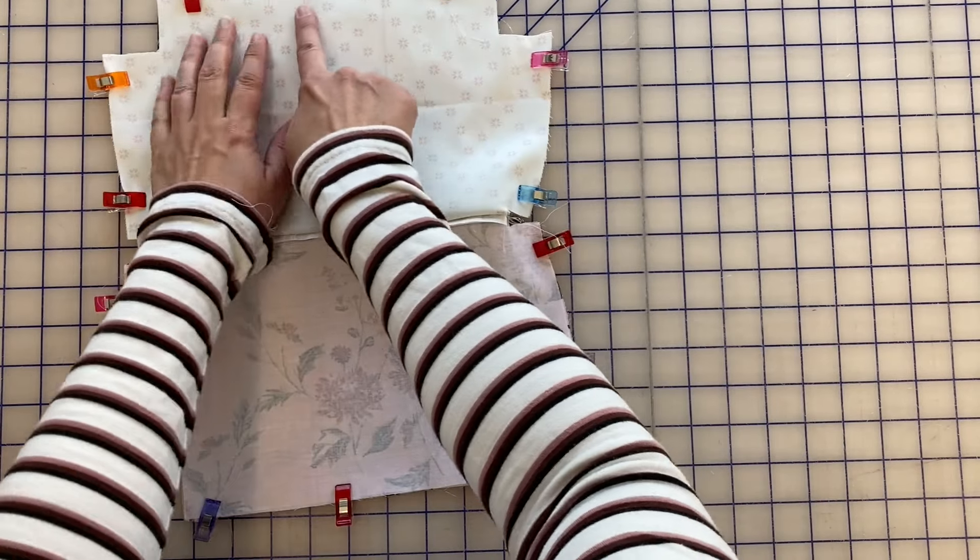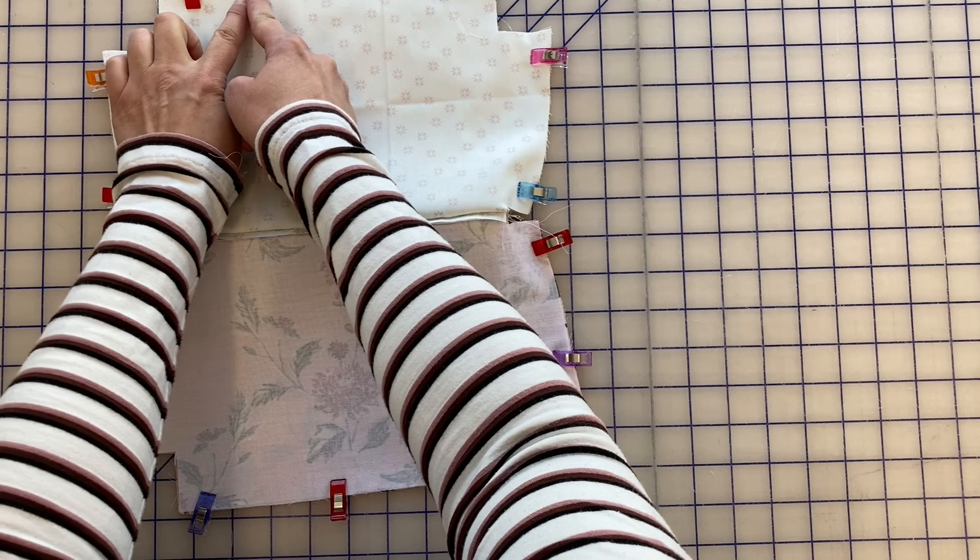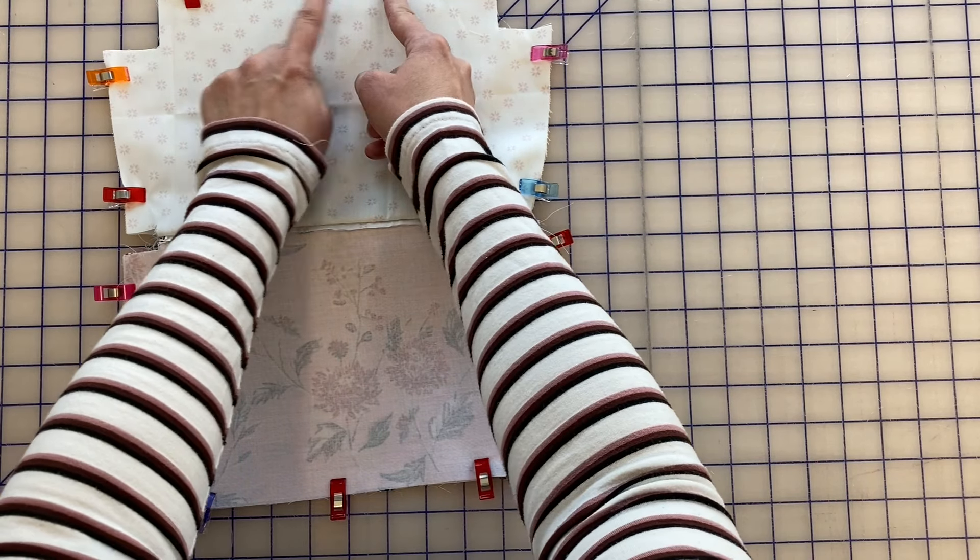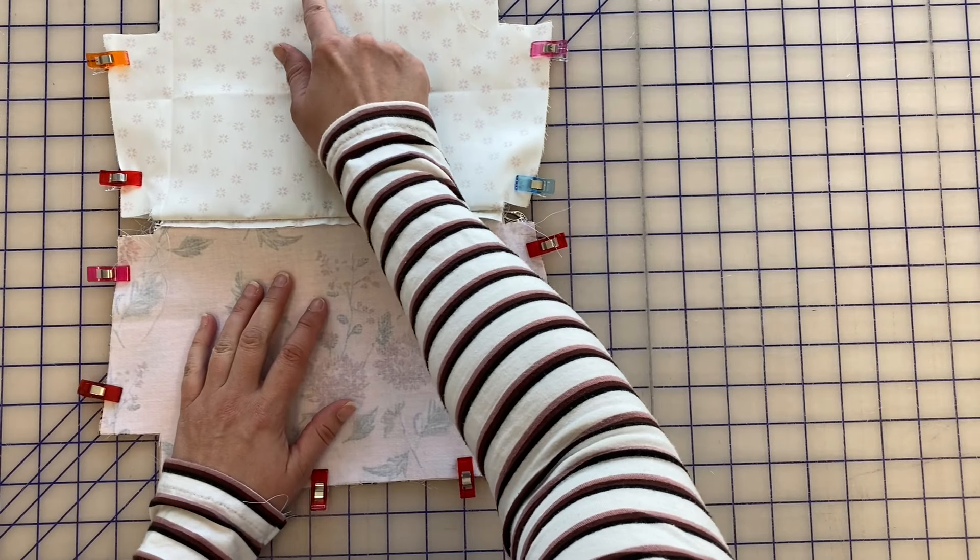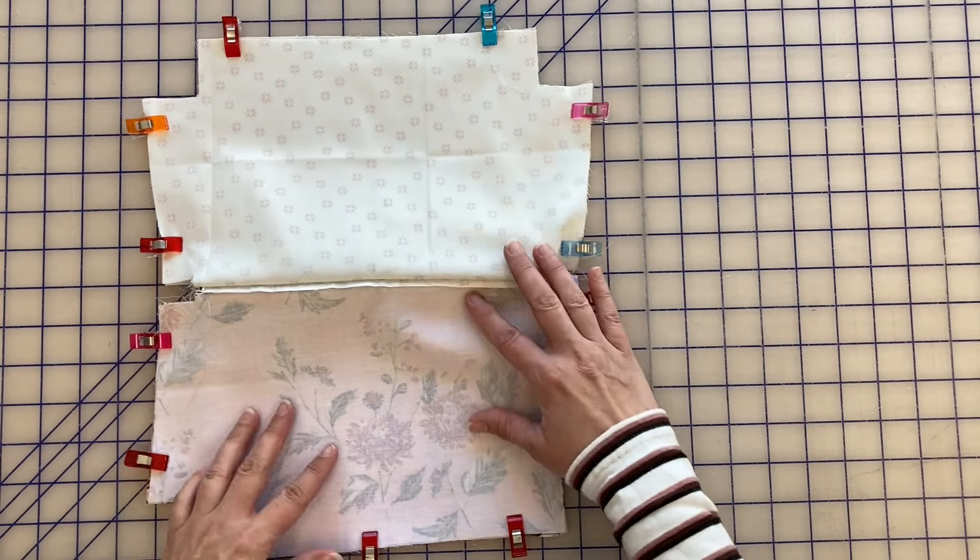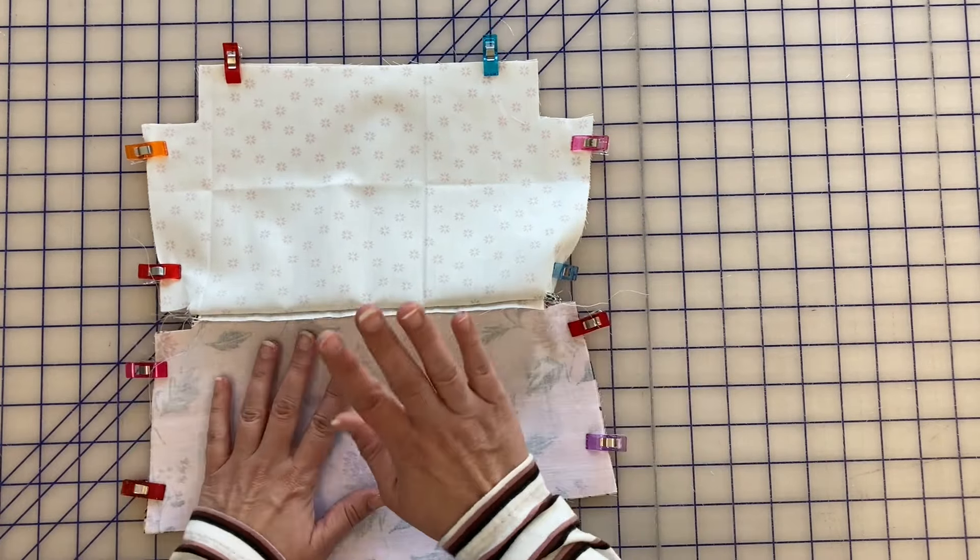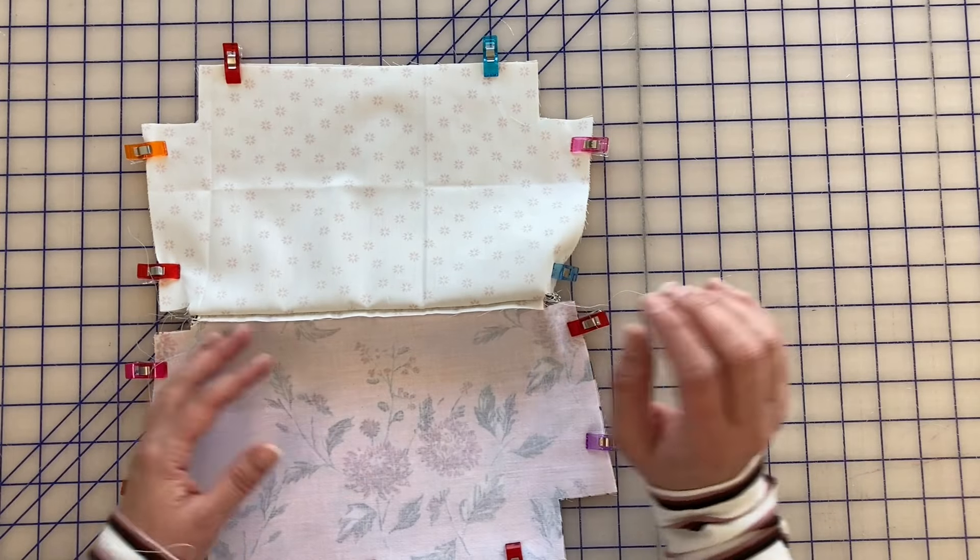But here at this part I'm going to only sew to about here. I'm going to leave this space open and then finish up the seam. This is going to leave a hole so that we can turn the bag right side out. I'm going to use a 3/8 inch seam allowance.